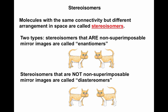Stereoisomers that are not non-superimposable mirror images are called diastereomers. In other words, diastereomers are stereoisomers that are not enantiomers. These two cats again have the same components, the same connectivity, and they differ in their arrangement in space, but they are not mirror images. See the orientation of the white legs? They both have white back left legs, but they differ in their front legs. They're stereoisomers, but they're not mirror images.